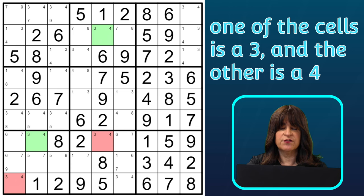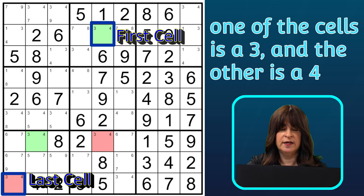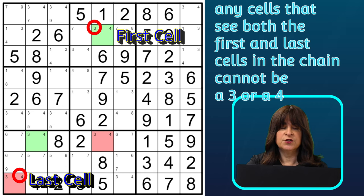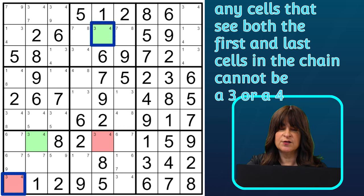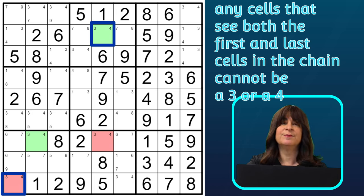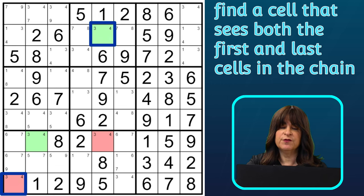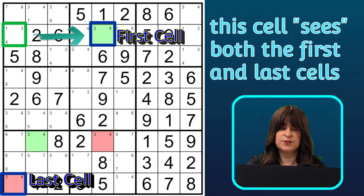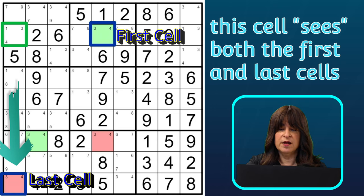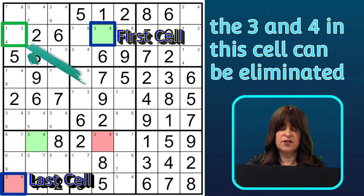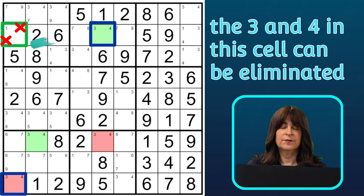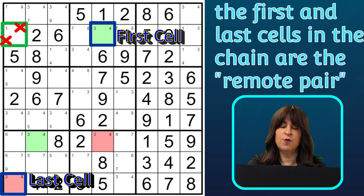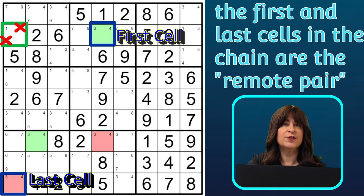So if we look at these two cells — the first and last in the chain — this is a 4-cell chain where one of them is a 3 and the other is a 4. Now any cells that see both these two cells can't have 3s or 4s in them, so any 3s or 4s that see both those cells can be eliminated. Can you find a cell that sees both the first and last cells in the chain? Yes, it's this one. This cell is in the same row, row B, as the first cell, and in the same column, column 1, as the last cell in the chain. So now this 3 and 4 can be eliminated. As for the terminology, these two cells — the first cell and the last cell — are considered the remote pair since they are remotely related through the intermediary cells.